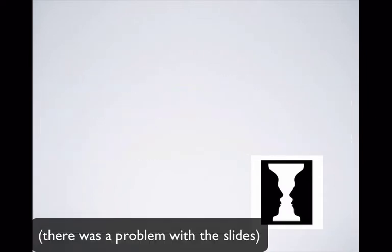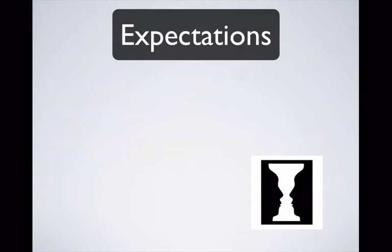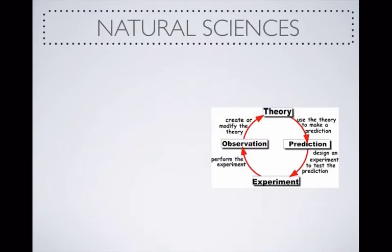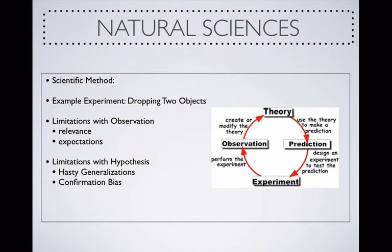Another limiter of our observations is expectations. When we undertake an experiment, we will definitely have expectations of what we can find, and these expectations can drive us and trick us into wanting to see results that prove ourselves correct, leading to a probably wrong answer. This leads to problems not only with the observation step of the scientific method but also with the hypothesis step. The fact that we want to prove something just because we assume it is true leads to hasty generalization, or trying to affirm something without enough evidence. This also leads to overlooking certain unwanted anomalies in our measurements — taking us to confirmation bias.